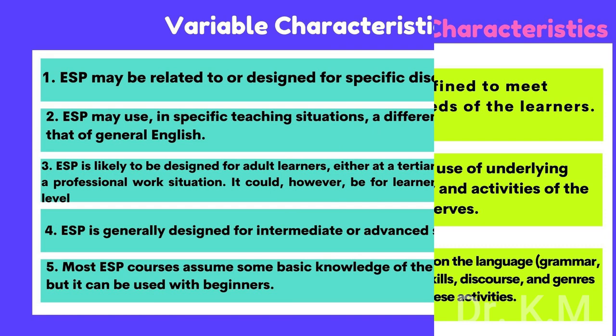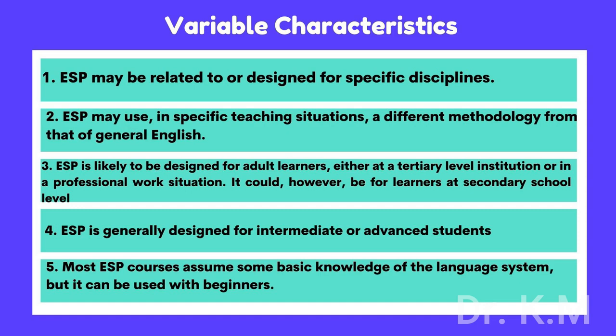Also, five variable characteristics are defined as follows: 1. ESP may be related to or designed for specific disciplines. 2. ESP may use, in specific teaching situations, a different methodology from that of general English. 3. ESP is likely to be designed for adult learners, either at a tertiary level institution or in a professional work situation, though it could be for learners at secondary school level. 4. ESP is generally designed for intermediate or advanced students. 5. Most ESP courses assume some basic knowledge of the language system, but it can be used with beginners.